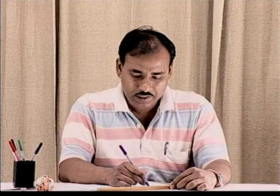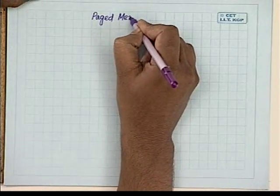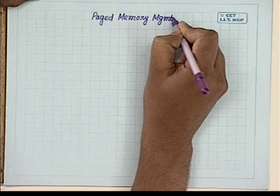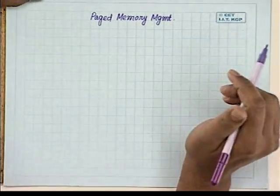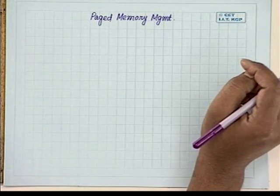In the last class, we were talking about Paged Memory Management. The logical address space of a job is divided into a number of pages where every page is of equal size, and the main memory is also divided into partitions of the same size called frames. We can put any page in any frame, so it is not necessary to have contiguous memory available for loading a job.